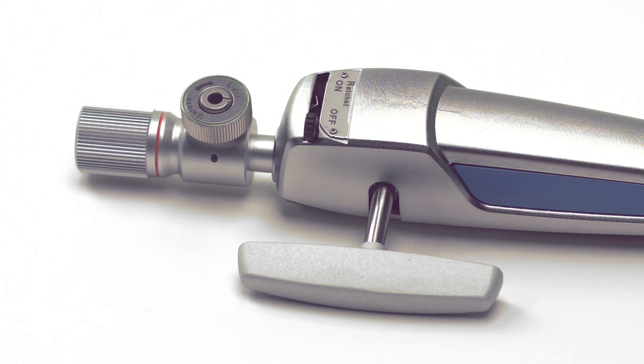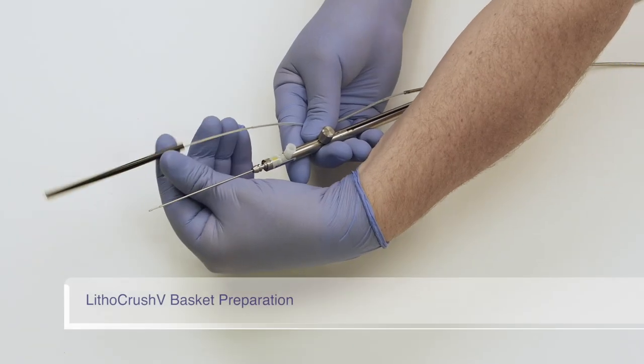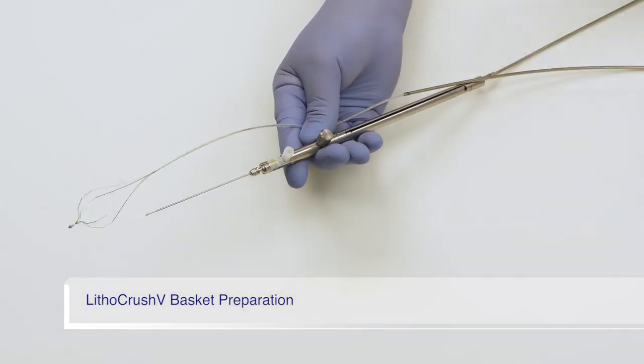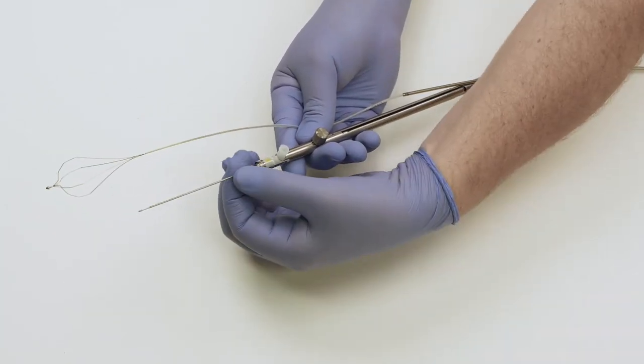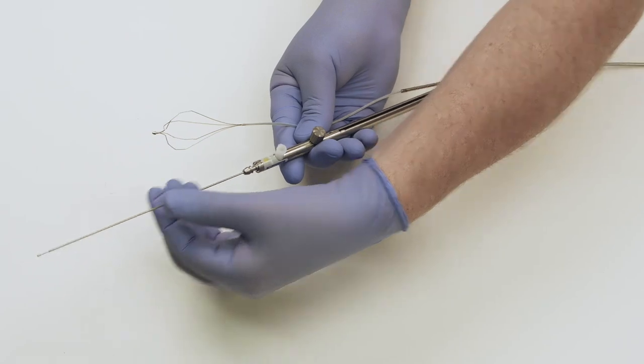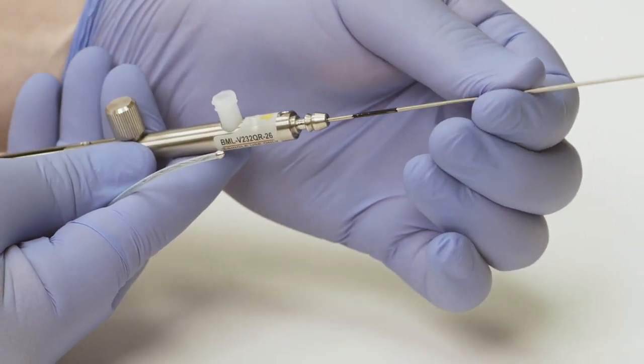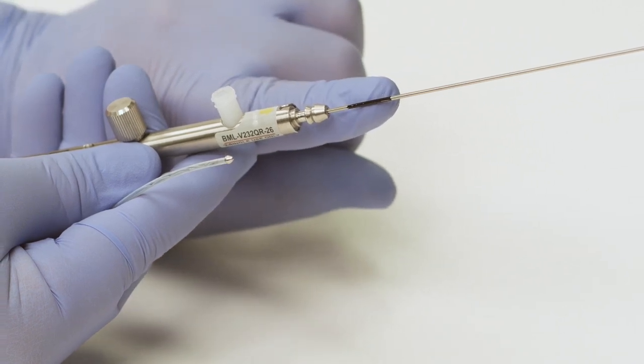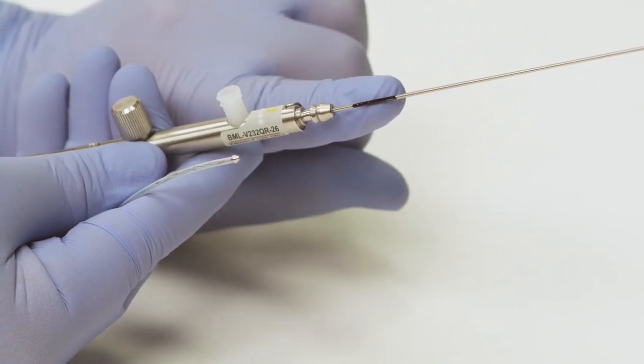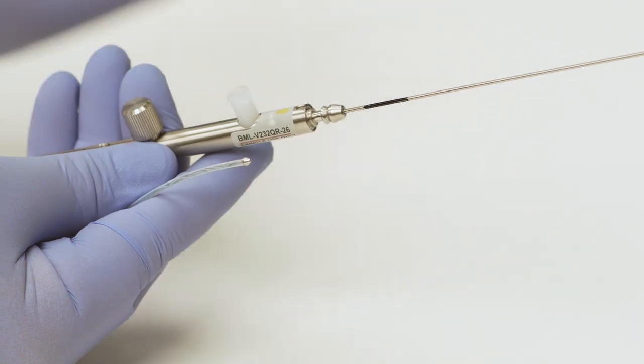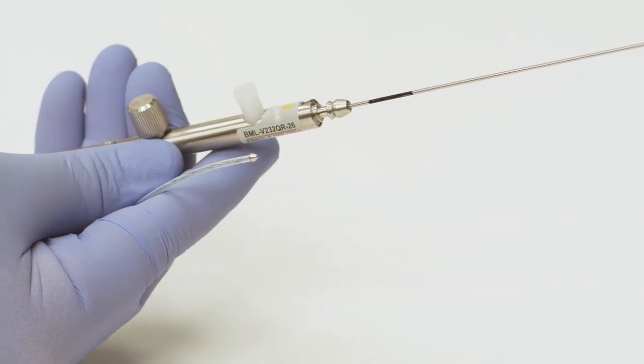The handle is now ready for assembly to the LithoCrush V basket. First, remove the black protective sleeve from the tip of the basket. Second, withdraw the stem at the proximal end until the basket is fully retracted. When the stem is fully withdrawn, a black mark will be visible on the stem. This indicates the basket is ready to be assembled to the handle.